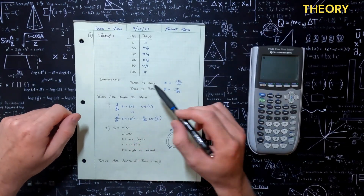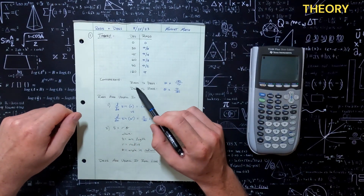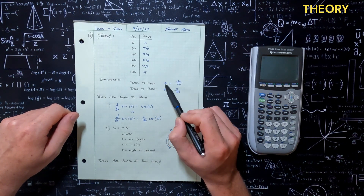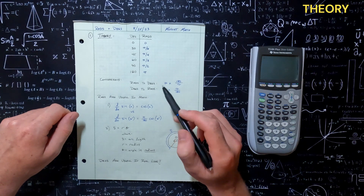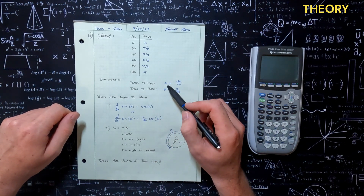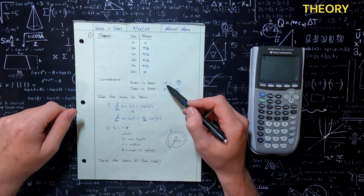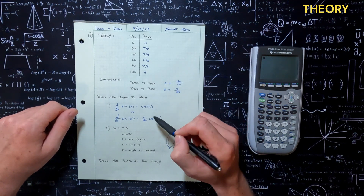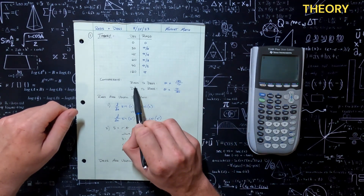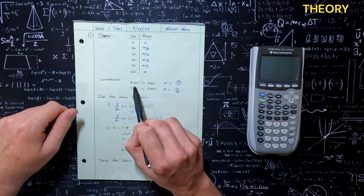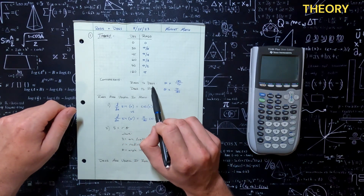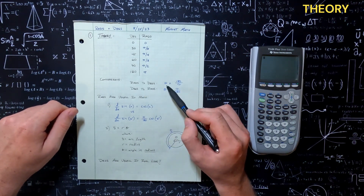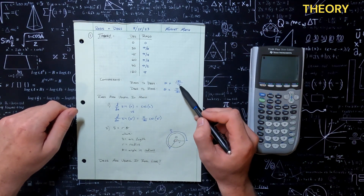Moving on to conversions here. If we have an angle — theta is what we typically use. If you haven't seen this symbol, that's what it is, it's called theta from the Greek alphabet. Typically it's going to be used for an angle measurement in math. If we have a theta given in radians and we want to go to degrees, we're just going to take that theta in radians and multiply it by 180 divided by pi.